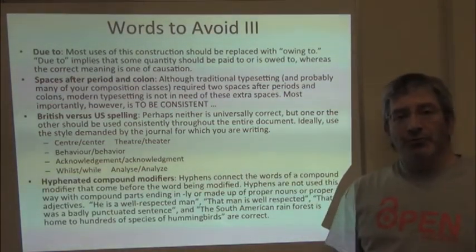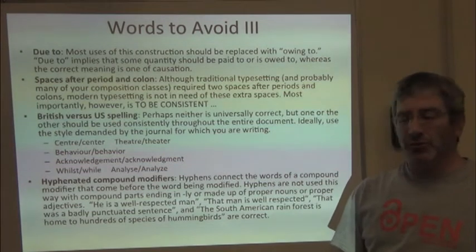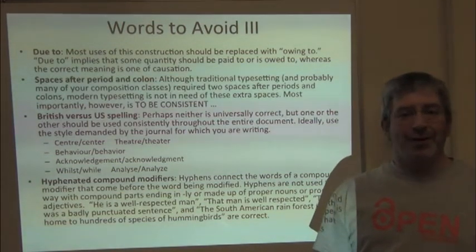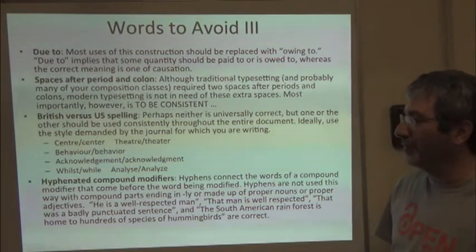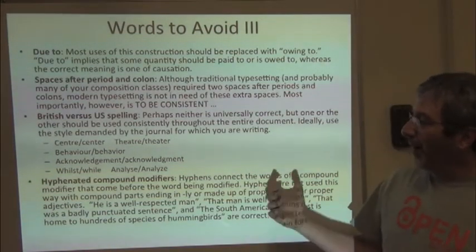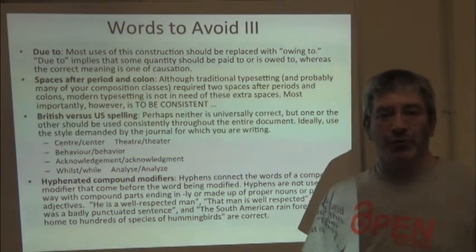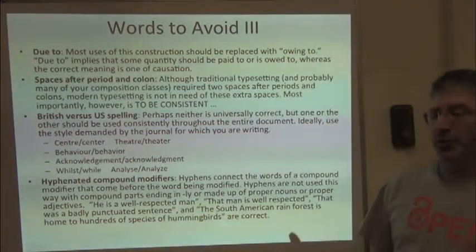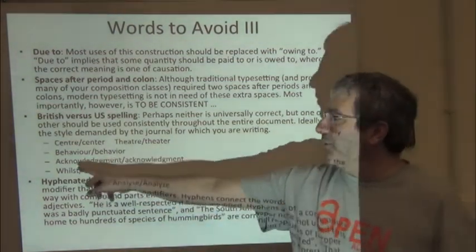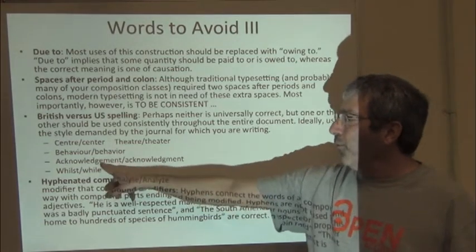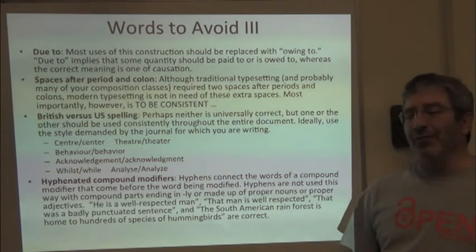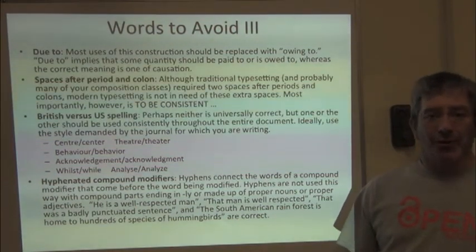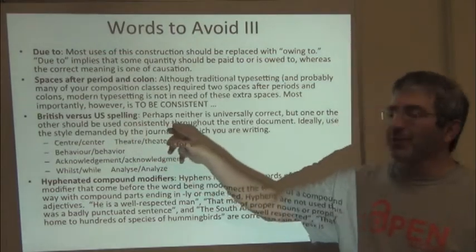Then we have British versus U.S. English spelling. I'm from the U.S., so obviously I prefer U.S. spelling, but a colleague from Great Britain would see the world quite differently. Neither is correct in an absolute sense — each one is correct if that's what the journal is requesting. One of the most common differences is 'acknowledgement' with or without the E. That's not a matter of preference; it's simply what's the style of your journal. Write consistently in one or the other.